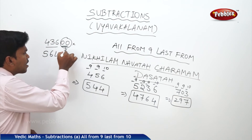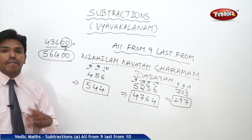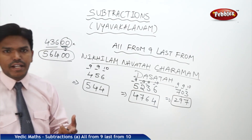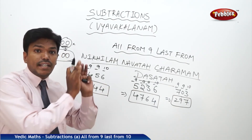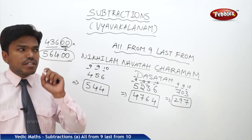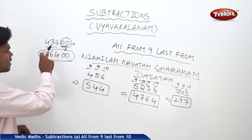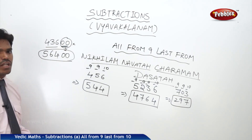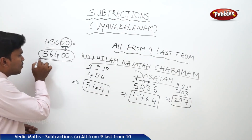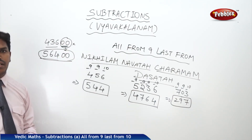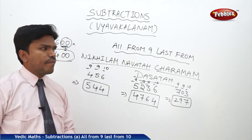After writing the answer for the remaining number, drop the zeros as they are — that will be your 'All from Nine, Last from Ten' answer. Whenever zeros come at the end, ignore them temporarily, write the result for the remaining digits, and then drop the zeros back. Note: this applies to zeros at the end, not zeros in the middle.